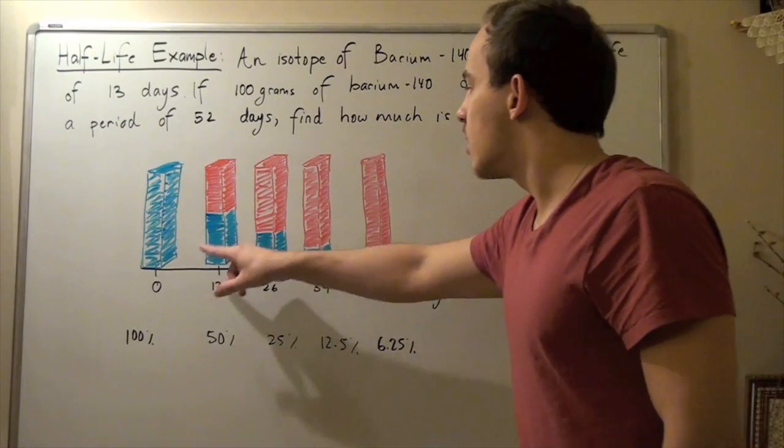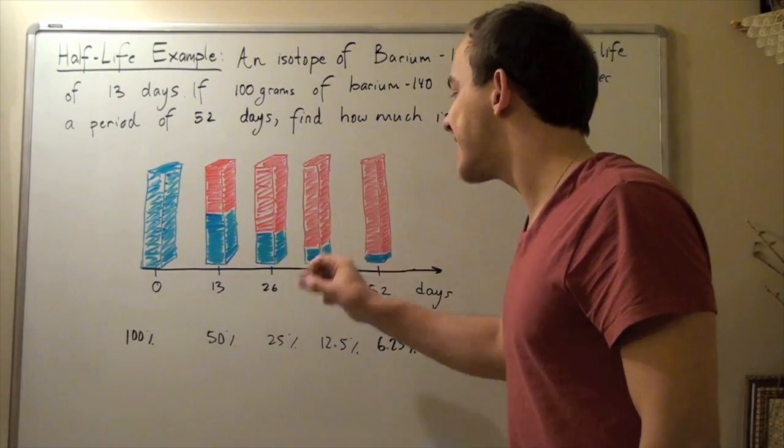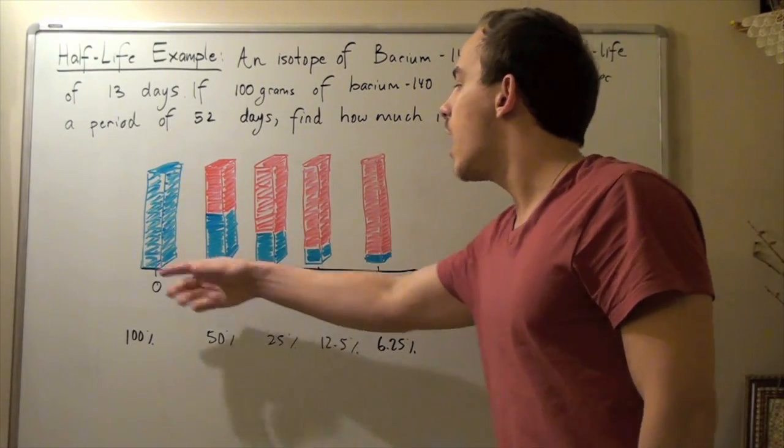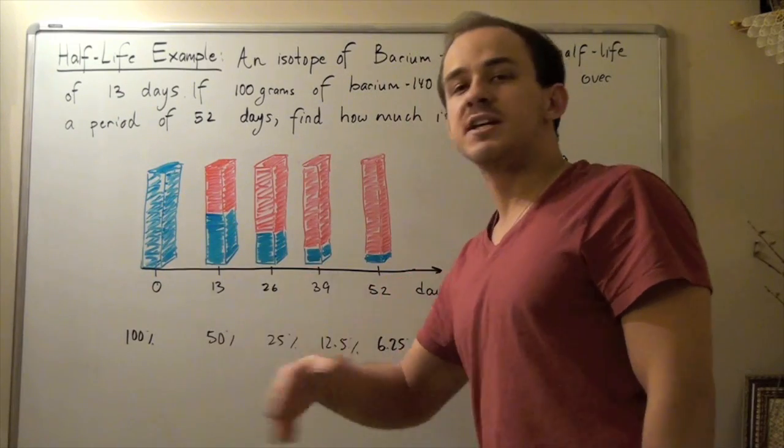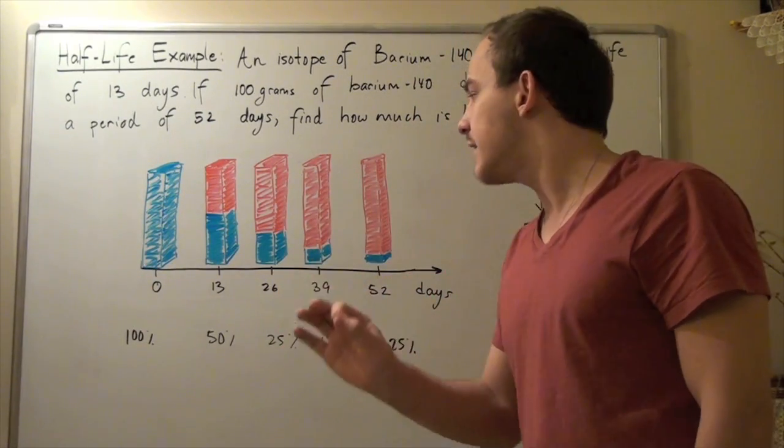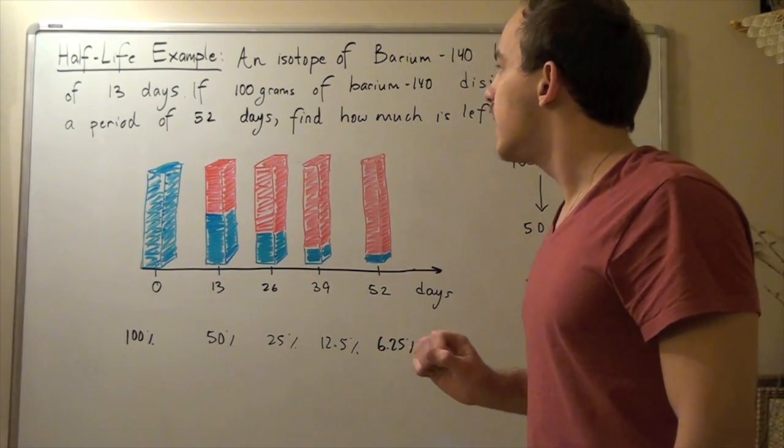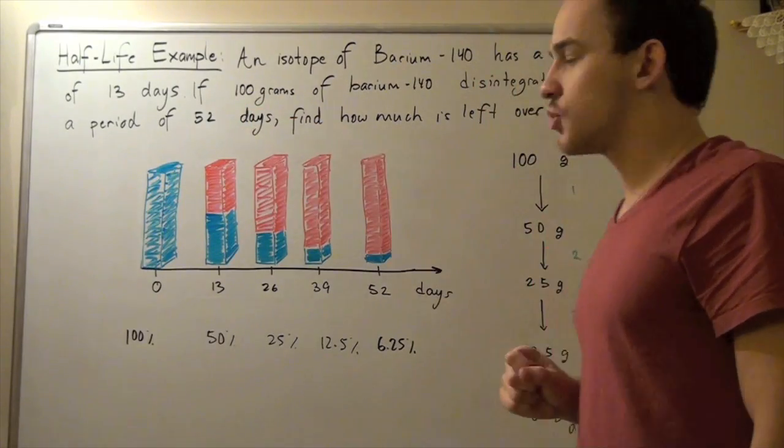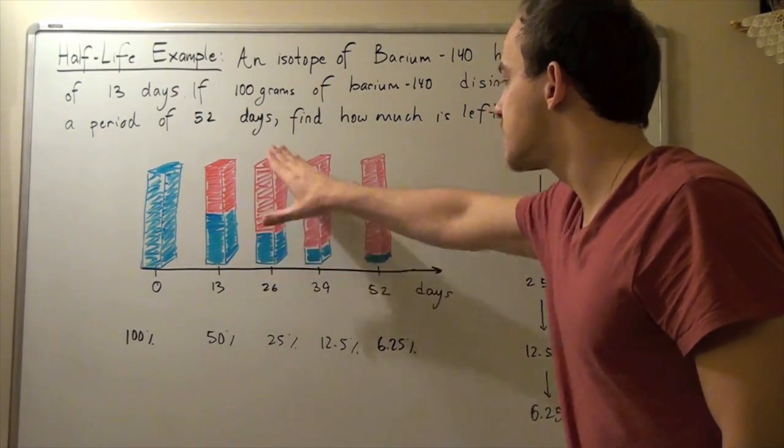That means we have exactly 25% of what we initially had, because 0.5 times 0.5 is 0.25, and 0.25 times 100 grams gives us this graph.